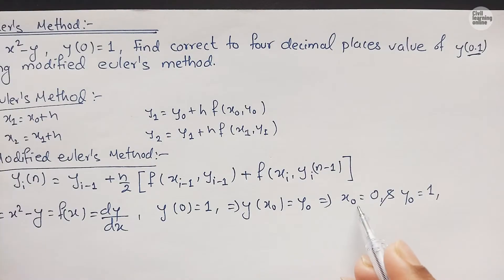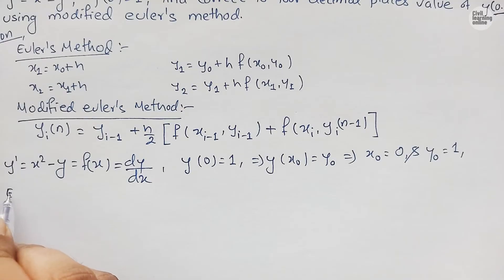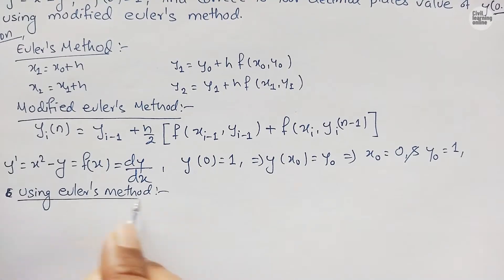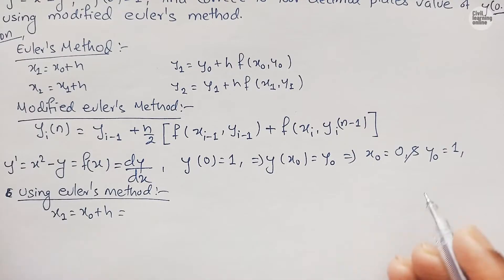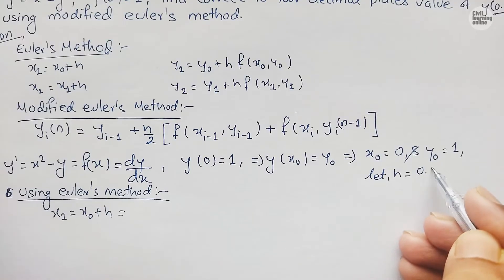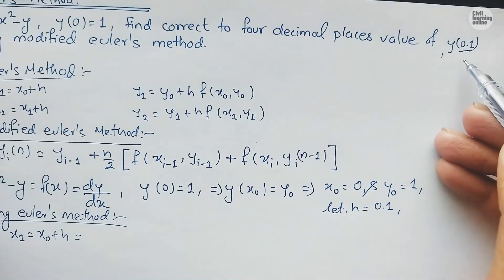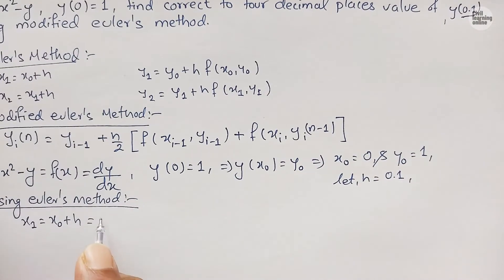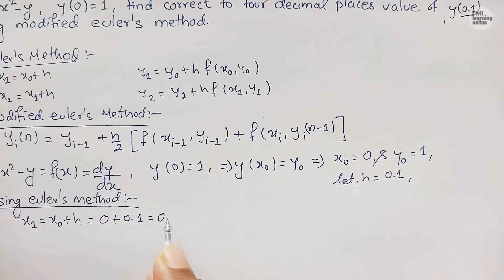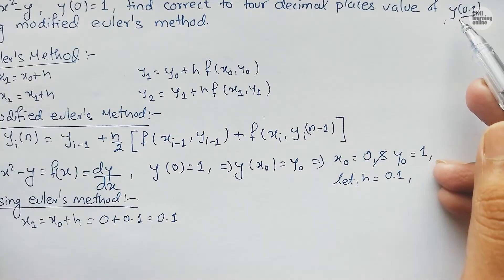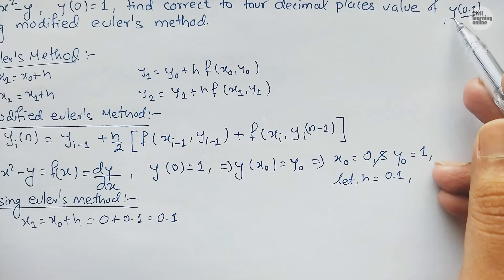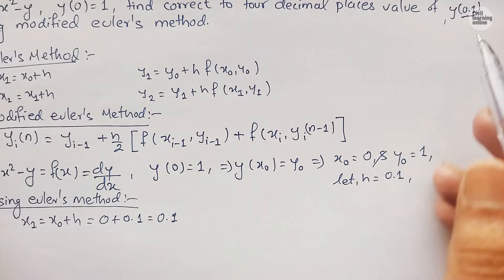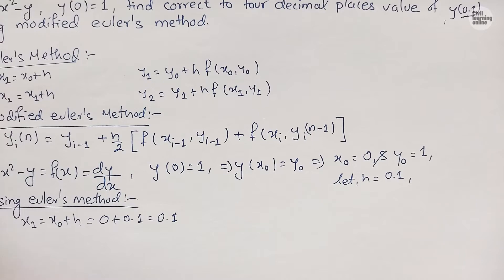We are asked to calculate y at x = 0.1, and since x₀ = 0, we let h = 0.1. This is because x₀ + h = 0 + 0.1 = 0.1, giving us x1 = 0.1. So we need to find the value of y at x = x1 = 0.1.